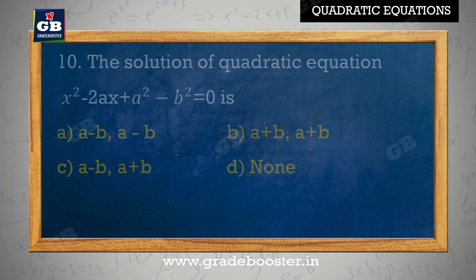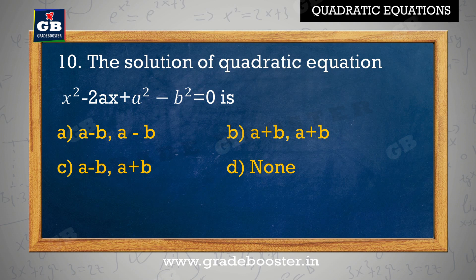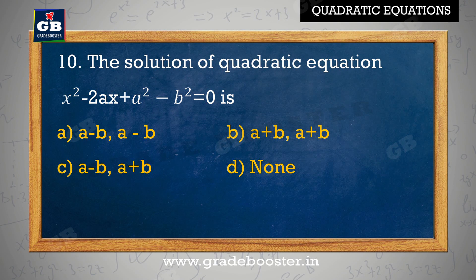The solution of the quadratic equation x square minus 2ax plus a square minus b square equal to 0 is: A. a minus b, a minus b, B. a plus b, a plus b, C. a minus b, a plus b, D. none.